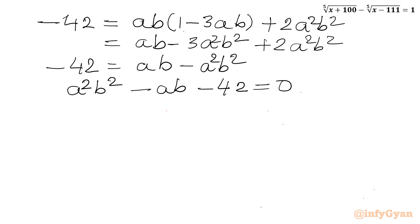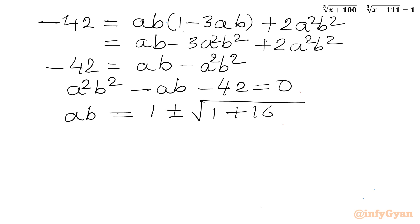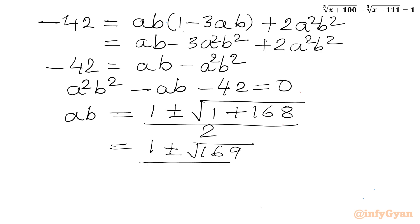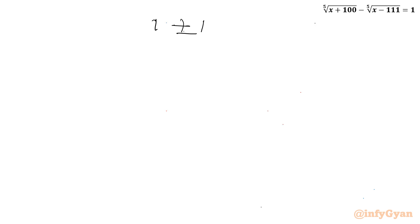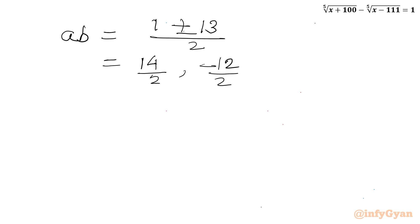Applying the quadratic formula: AB equals [1 ± √(1 + 168)] / 2 equals (1 ± √169) / 2 equals (1 ± 13) / 2. With the plus sign: 14/2 equals 7. With the minus sign: negative 12/2 equals negative 6. So we have two values of AB: 7 and negative 6.